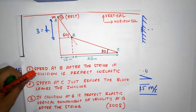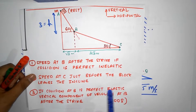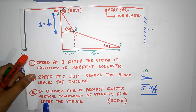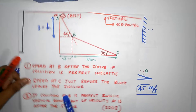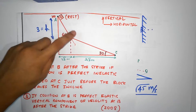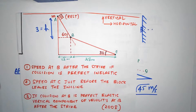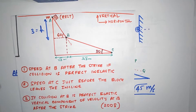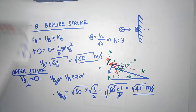I want to concentrate on question number three. If the collision at B was perfectly elastic — meaning the block goes and bangs there elastically — find the vertical component of the velocity at B after the strike. The object goes and bangs; if it's a perfect elastic collision, it's going to take off somehow. We need to find the horizontal and vertical components after launch. This involves some amazing geometry, so let's do it.